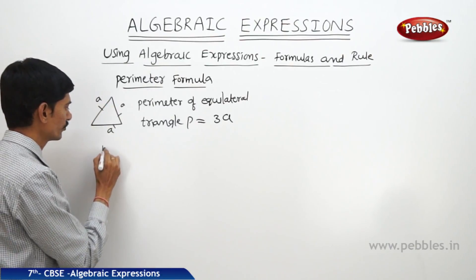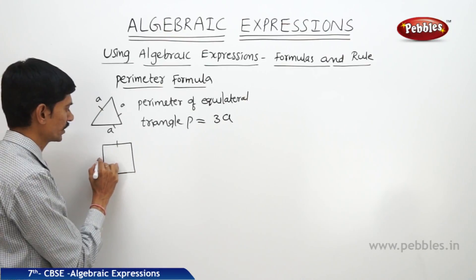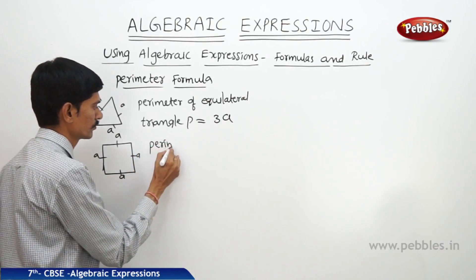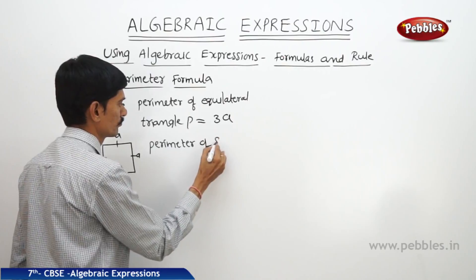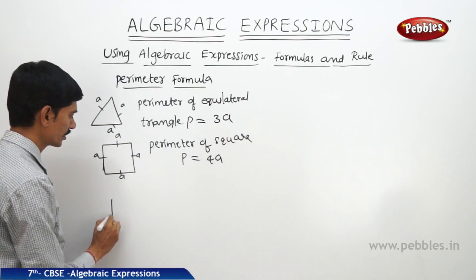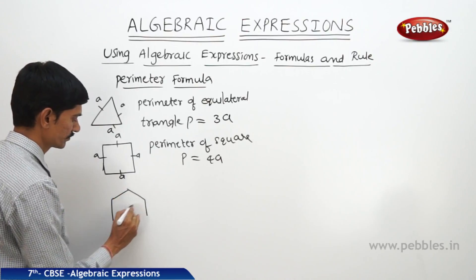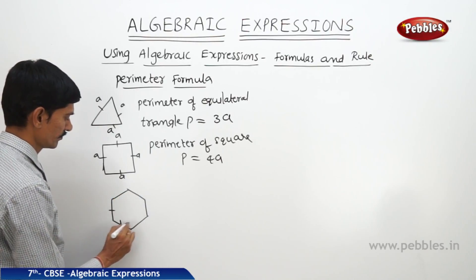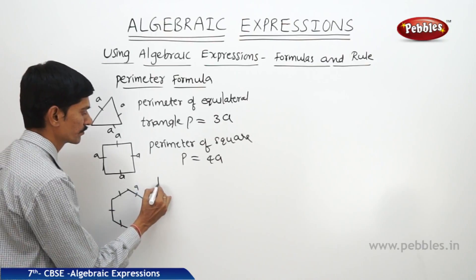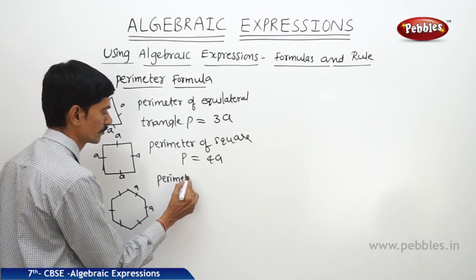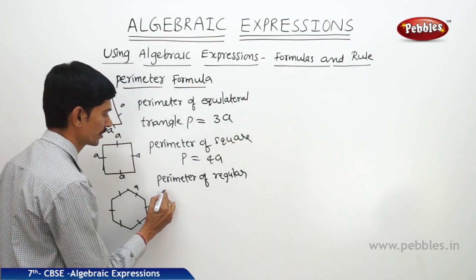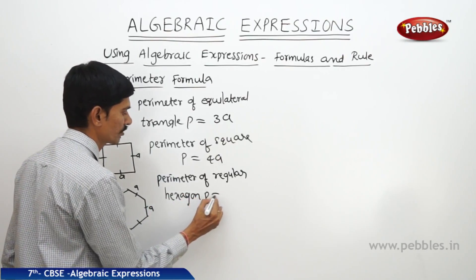When there is a square with four equal sides, the perimeter of a square whose side is A units is P equals 4A. Now if there is a regular hexagon whose side is A units — a regular hexagon means all sides are equal — then the perimeter of a regular hexagon is P equals 6A.